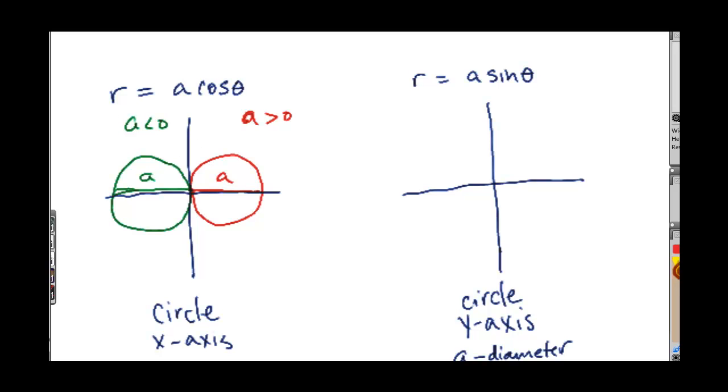And that's if a is less than zero. Now by the same logic, hopefully you can see that r equals a sine theta would be in the y-axis with this diameter being a. And then for less than zero, it would be going down.